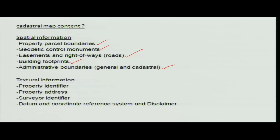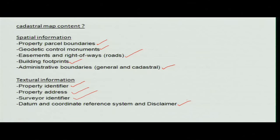Textual information on a cadastral map includes the language it is written in, the name of the property identifier, how to identify it, the address, address sheets, the surveyor who carried out the survey, datum coordinates, and other relevant activity. This is what you expect from a cadastral map.